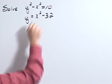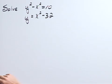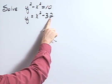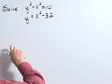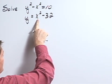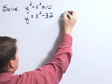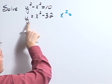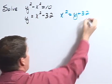We have y squared minus x squared equals 10, and y equals x squared minus 32. I could substitute x squared minus 32 in for y, but then I'd have to FOIL all of that and my numbers would get quite large. Another way to approach this would be to solve for x squared, since I have an x squared in the first equation. So x squared would equal, adding 32 to both sides, x squared would equal y plus 32.